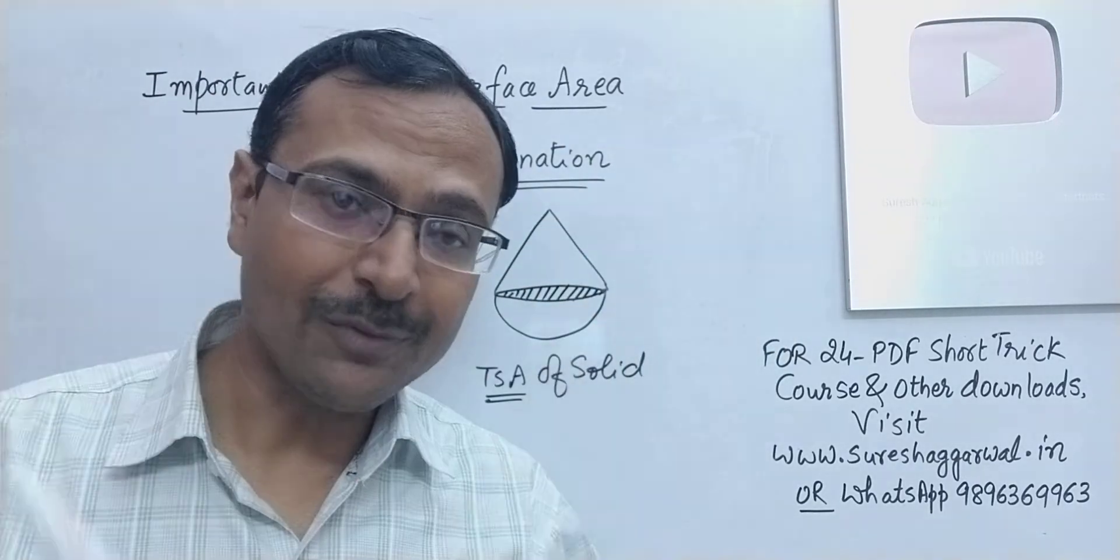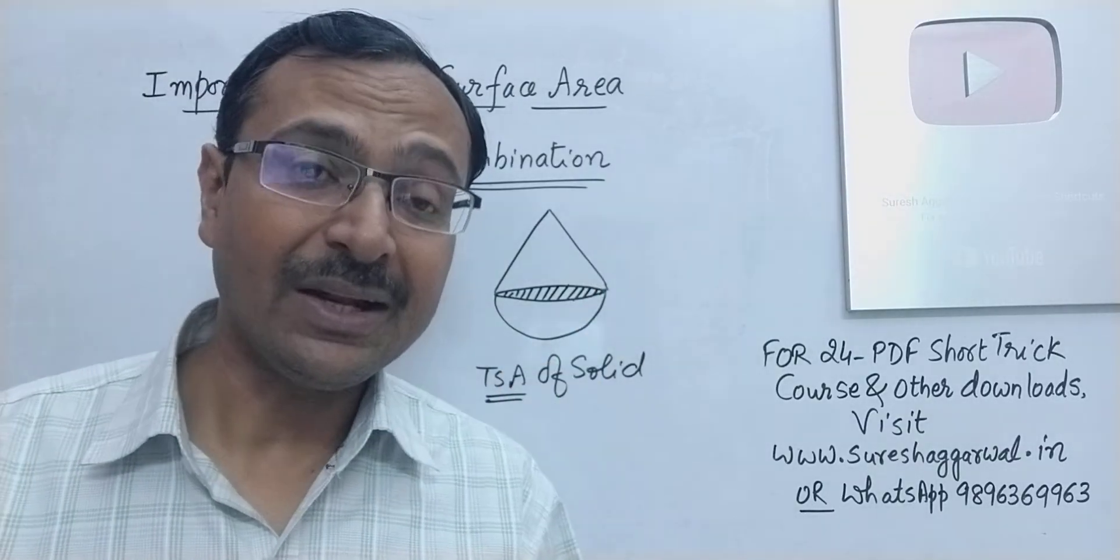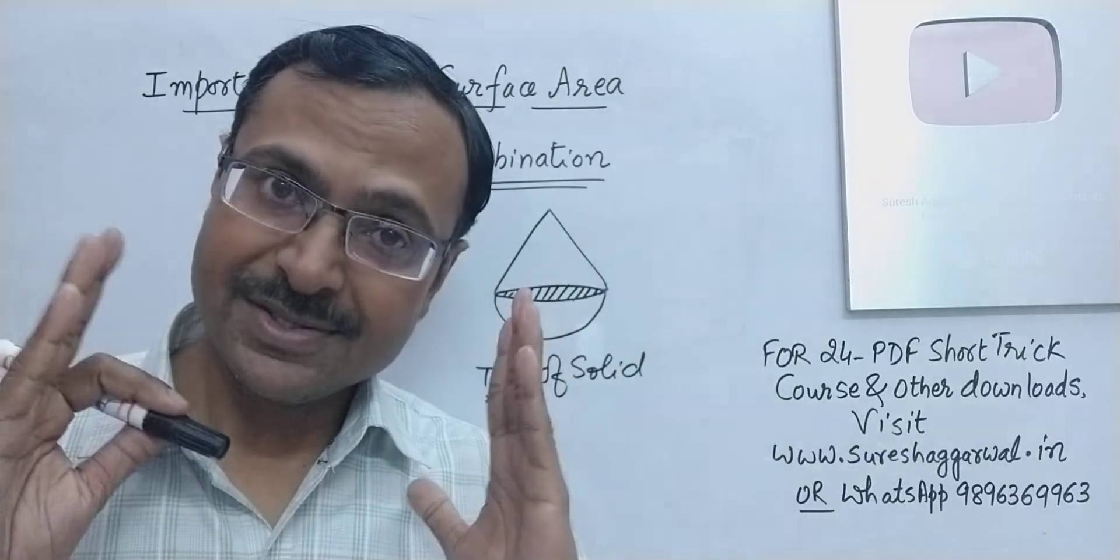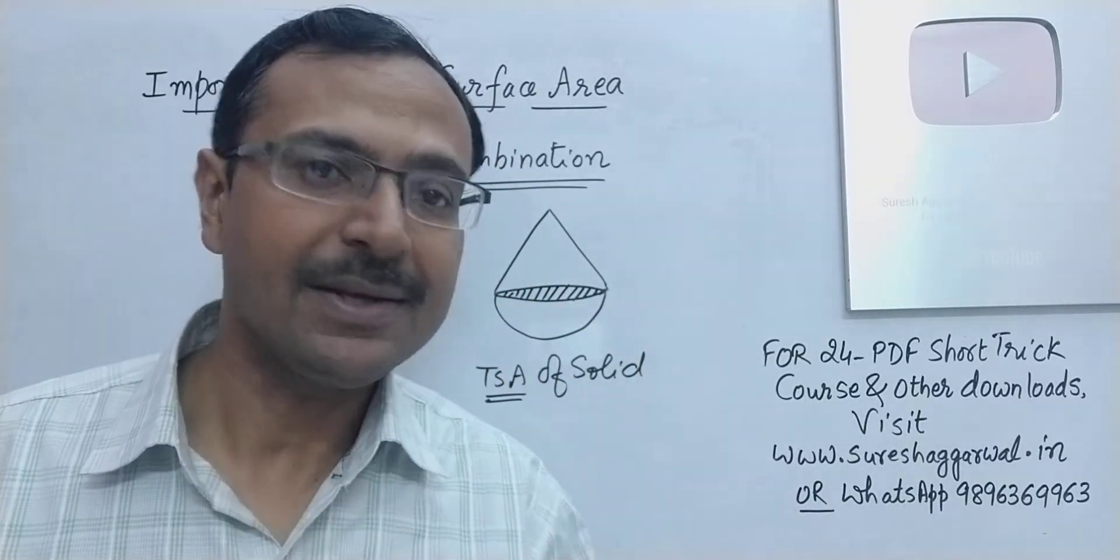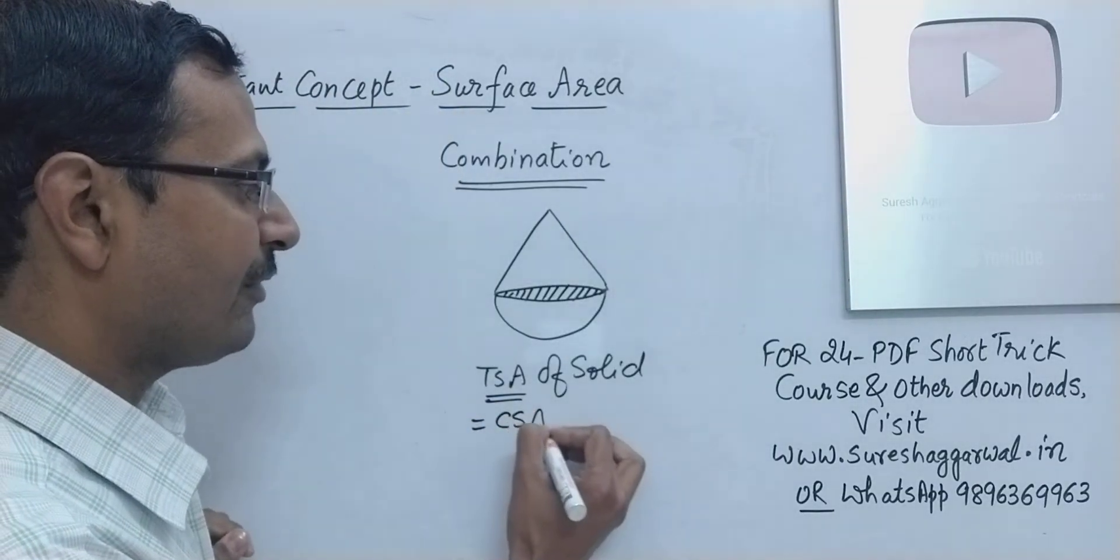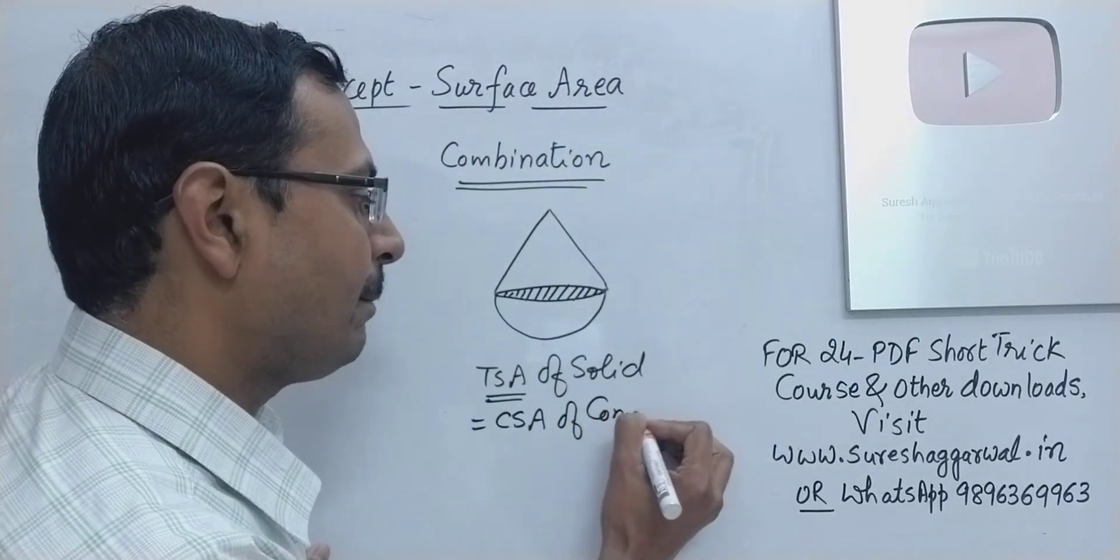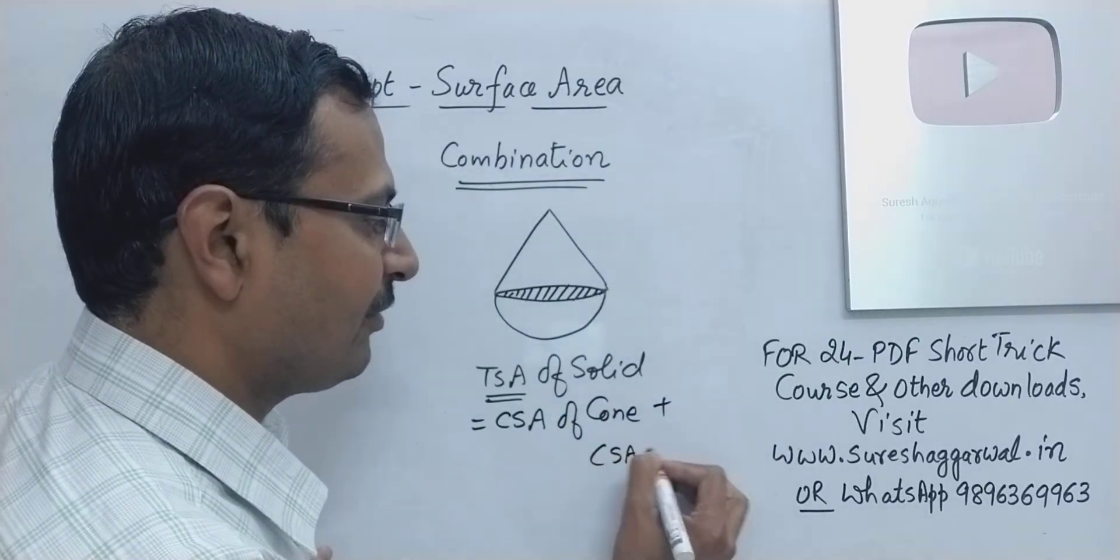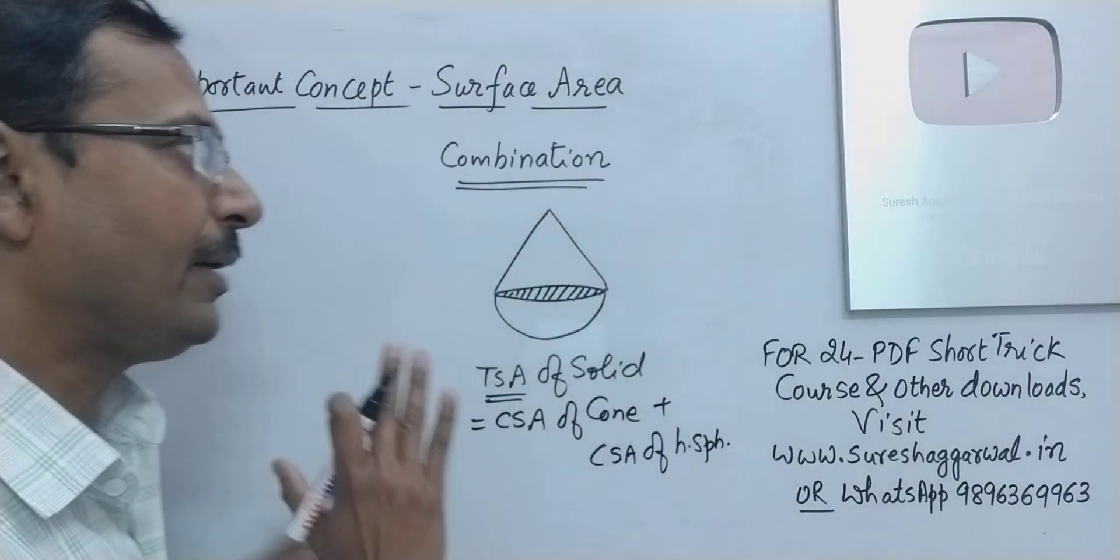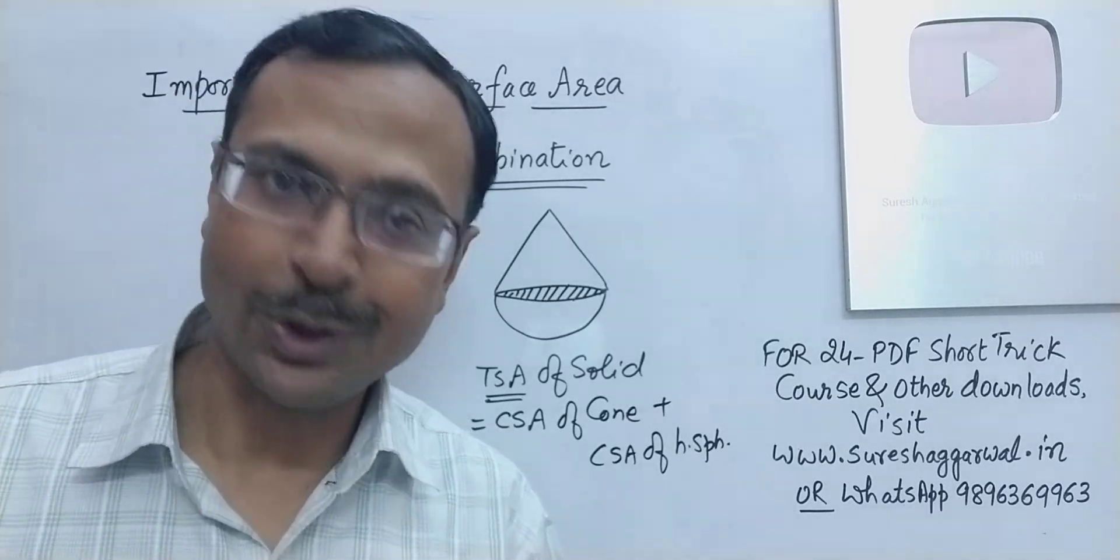So that surface area is not at all visible. If you have to find the total surface area of this solid, then only the curved surface area of the conical part and curved surface area of the hemispherical part is left out. And that's what we have to do for finding the total surface area of this solid. This is CSA of cone plus CSA of hemisphere. I am not going into the details, the formula. This is basically a conceptual video for developing the understanding, not for solving problems.